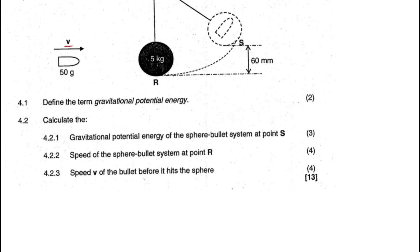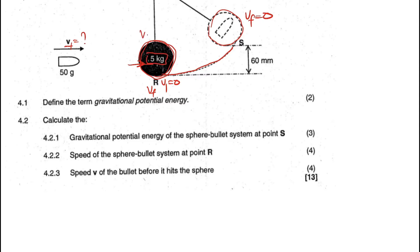The bullet moves with a velocity before collision, collides with the block, and as soon as it enters, they move together with a velocity just after collision. The velocity decreases as they move up, reaching zero at point S. Before collision, the wooden block's initial velocity is zero, and the bullet's initial velocity is unknown. The velocity just after collision is also unknown.